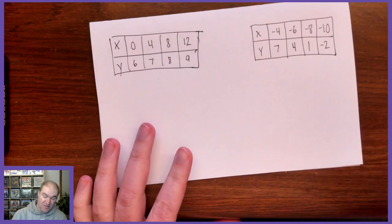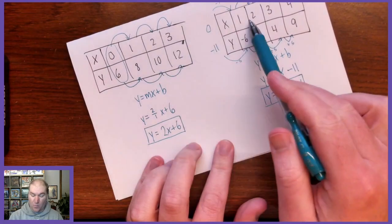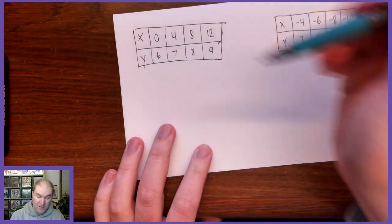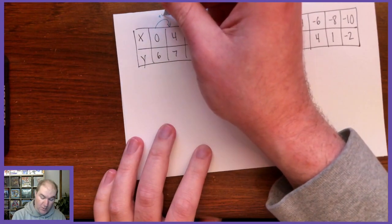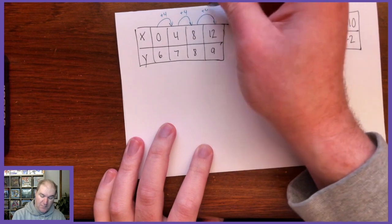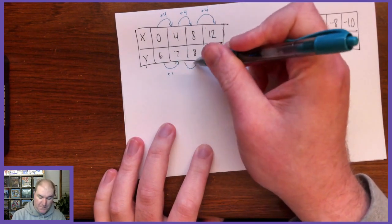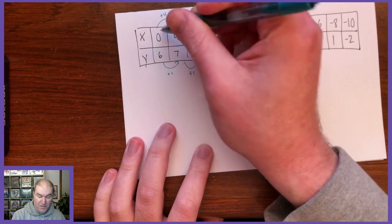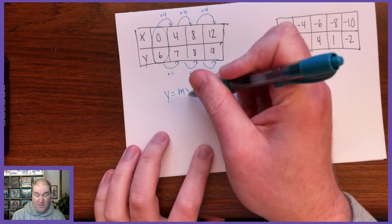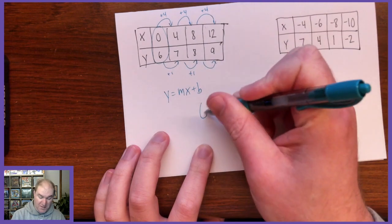Something else they might do is, so far every problem we've done, the x's have just been counting up by 1. And that might not always be the case. Look at this one. The x's are counting up by 4, and the y's are counting up by 1. But they did give us the 0. So y equals mx plus b. We know b is 6.